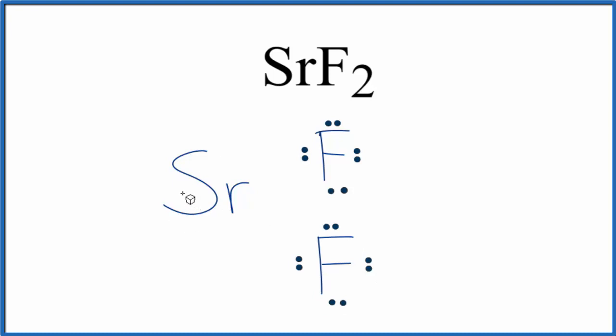The strontium, it lost two valence electrons. Since electrons are negative, it lost two negative charges. Now it's two plus. Each fluorine got an electron, so it's going to be one minus.